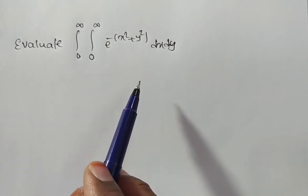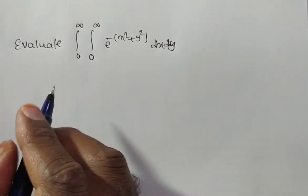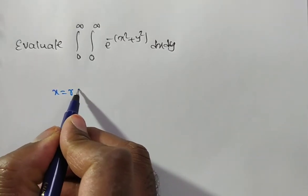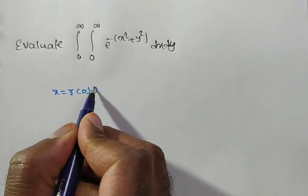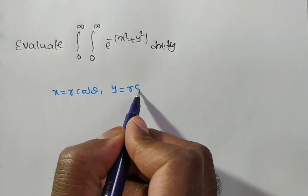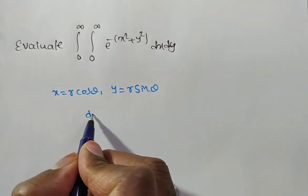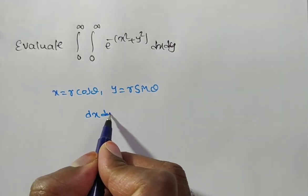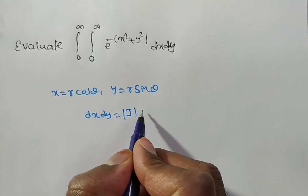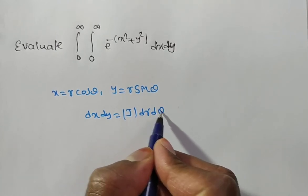So in polar coordinates, what we have to consider: x is equal to r cos theta, y is equal to r sin theta, and dx dy is equal to the Jacobian times dr d theta.